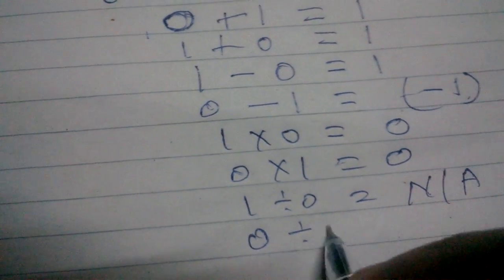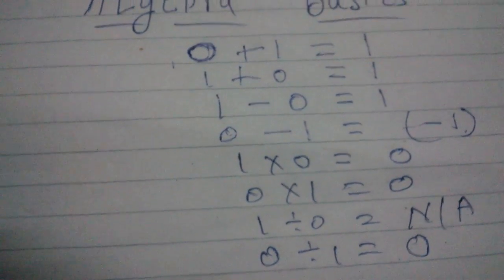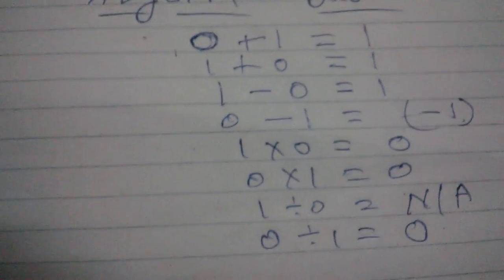1 divided by 0 is something we don't know, and 0 divided by 1 is equal to 0. So next time when you get something related to this, make sure you don't mess up. Okay, thank you and stay awesome.